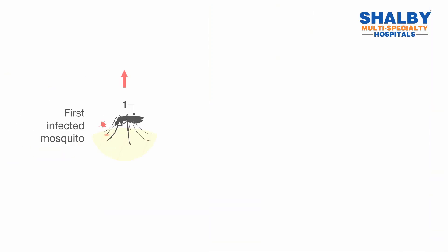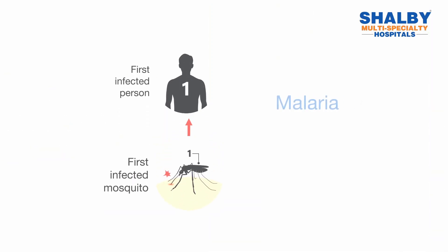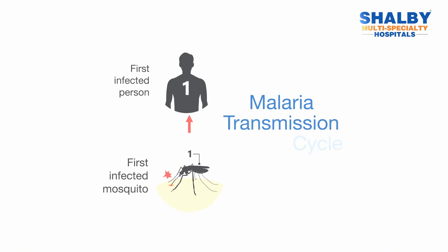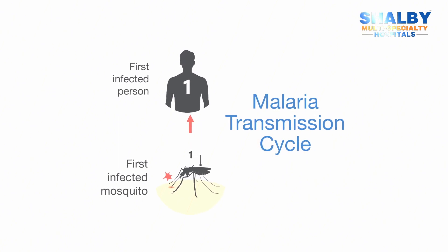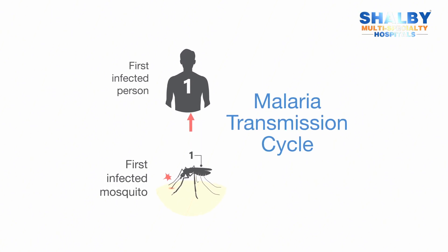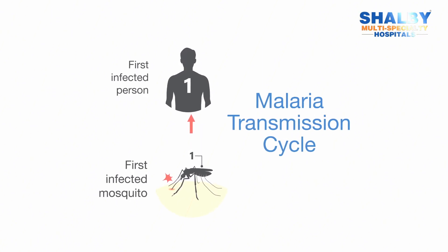Suppose a mosquito which carries a malarial parasite bites a person — what happens is it sucks the blood. By sucking blood, it inserts the malarial parasite into that particular person, and that's how that person gets the malarial disease.